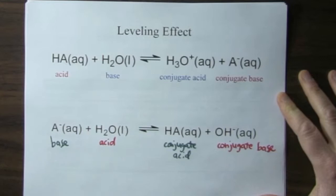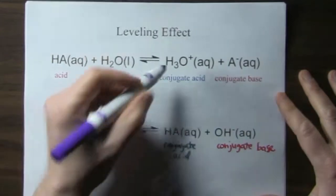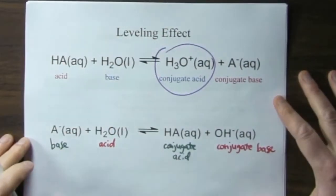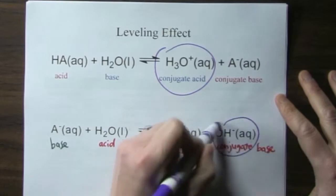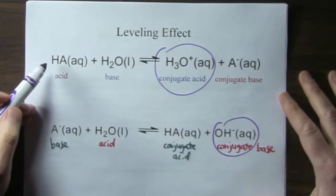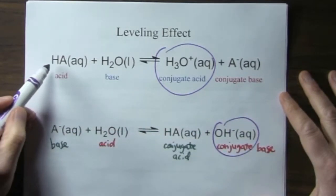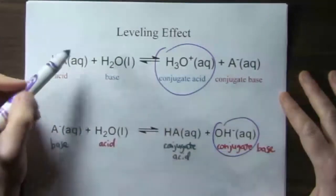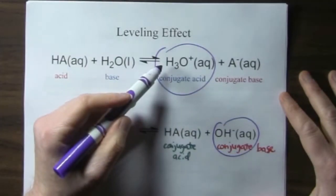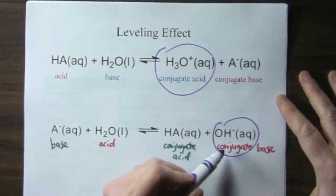Hydroxide is the conjugate base of the water. Whereas, here's our base, it accepts a proton and becomes a conjugate acid. So when we put a compound in water, an acid in water, it will make hydronium. If we put a base in water, it makes hydroxide. The stronger the acid, the more conjugate acid it makes. The stronger the base, the more hydroxide it makes.